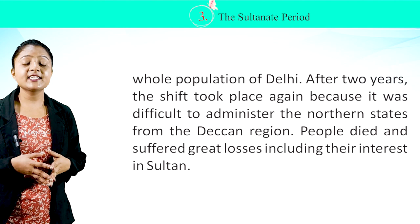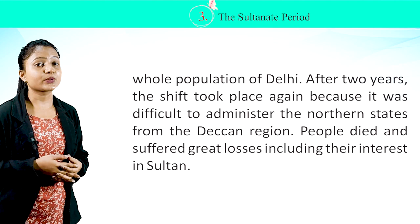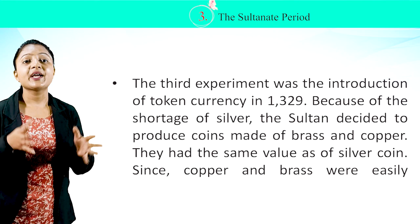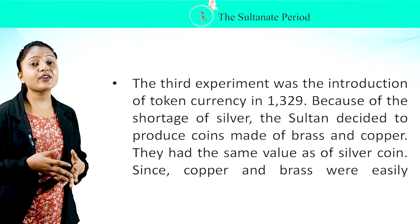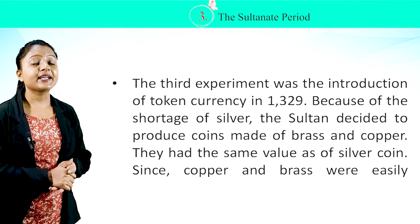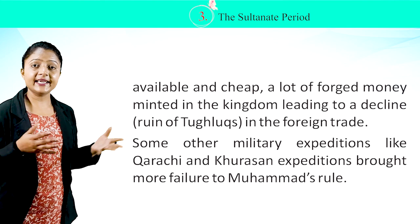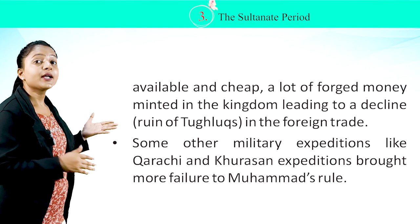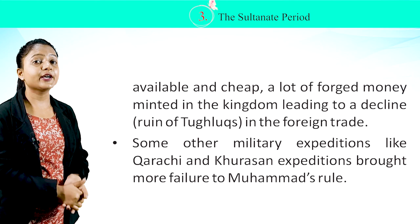People died and suffered great losses, losing their faith in the Sultan. The third experiment was the introduction of token currency in 1329. Because of a shortage of silver, the Sultan decided to produce coins made of brass and copper with the same value as silver coins. Since copper and brass were easily available and cheap, a lot of forged money was minted in the kingdom, leading to a decline and ruin of the Tughlaqs in foreign trade. Other military expeditions like the Karachi and Khorasan expeditions brought further failure to Muhammad's rule.